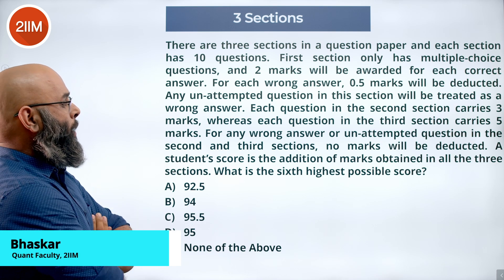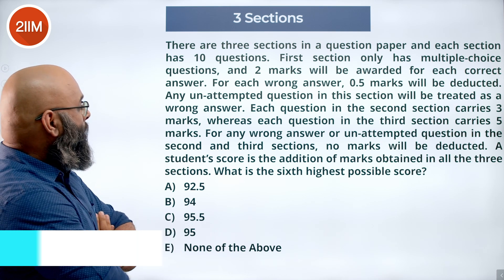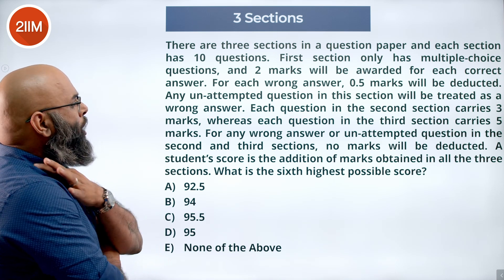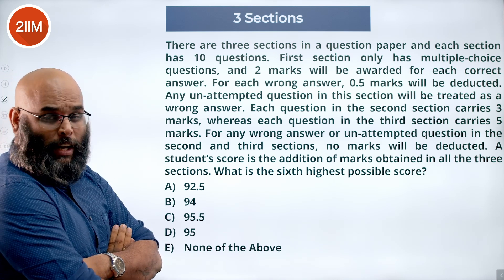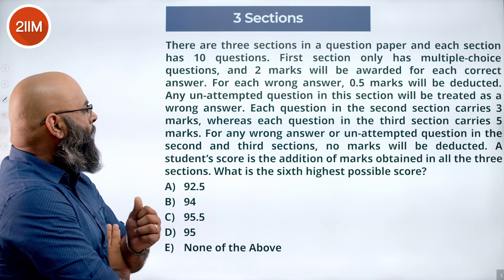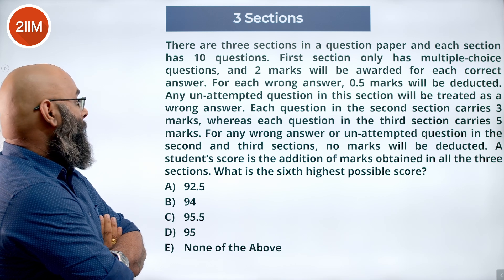There are three sections in the question paper and each section has 10 questions. First section only has multiple choice questions and two marks will be awarded for each correct answer. For each wrong answer, 0.5 marks will be deducted. Any unattempted question in the section will be treated as a wrong answer.